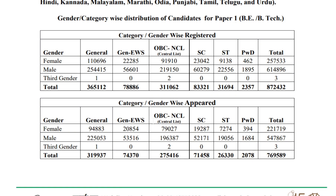Hi friends, welcome to College Solution YouTube channel. Here is the video for calculating your rank using your percentile. First of all, you should know the number of students: registered is 8,72,432 but appeared is 7,69,589.